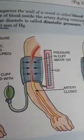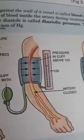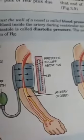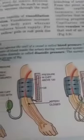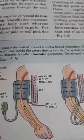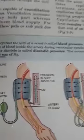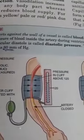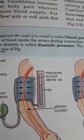Now let us look at blood pressure. The pressure with which blood flows inside the body is called blood pressure. It is measured using two values: one is systolic pressure and the other is diastolic pressure.